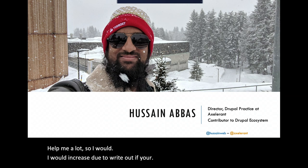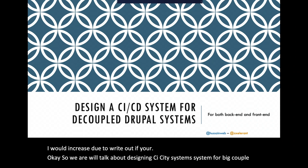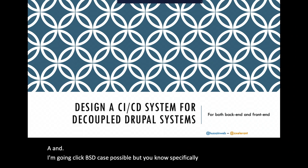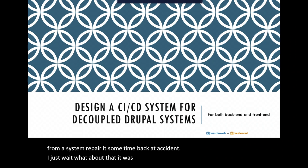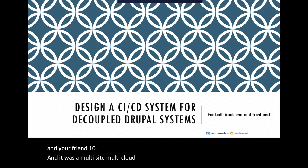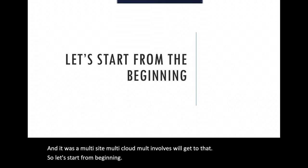We're going to talk about designing a CI/CD system for decoupled Drupal systems. I'll be as generic as possible, but I'll take examples from a system we built at Accelerant — it was a decoupled system with Drupal 8 on the back end and Angular on the front end, and it was multi-site, multi-cloud, multi-region — we'll get to that.